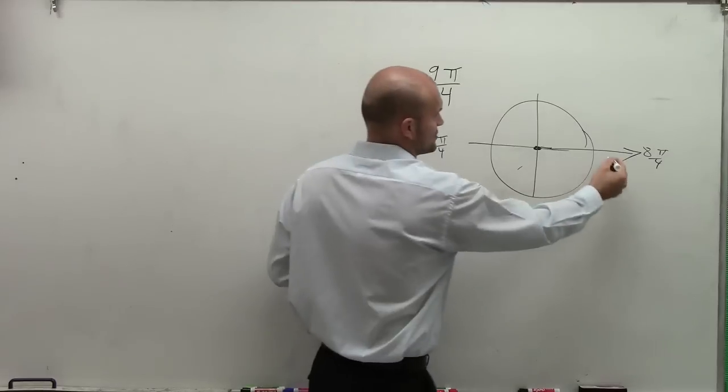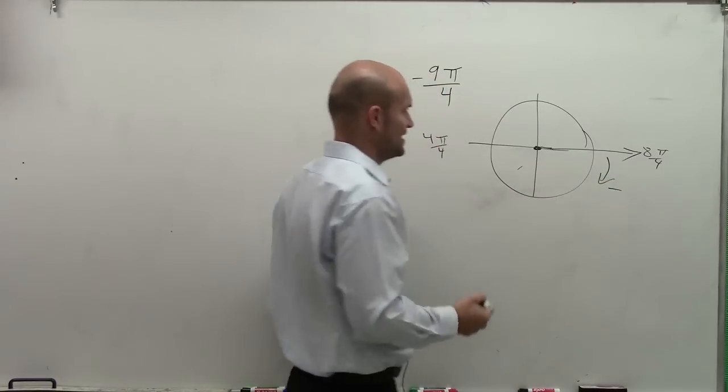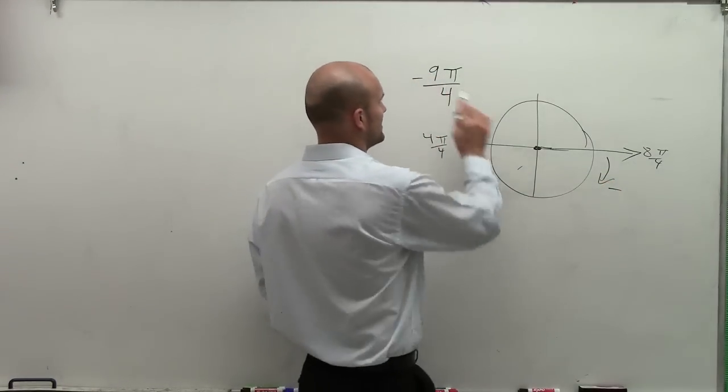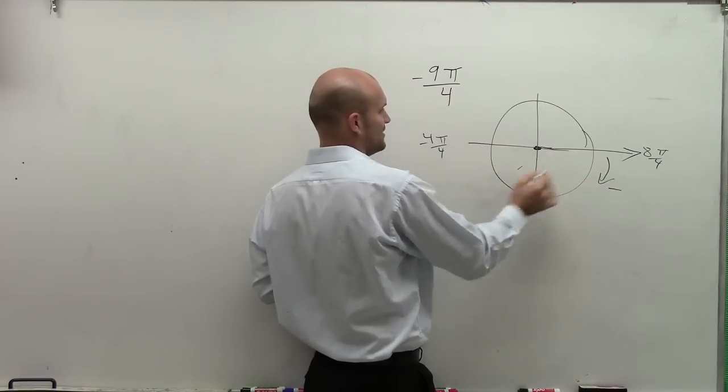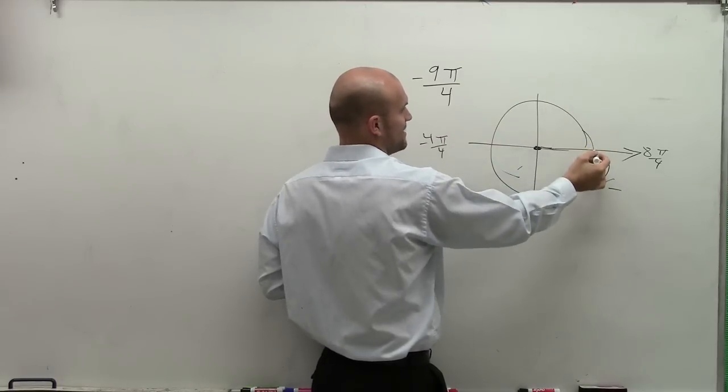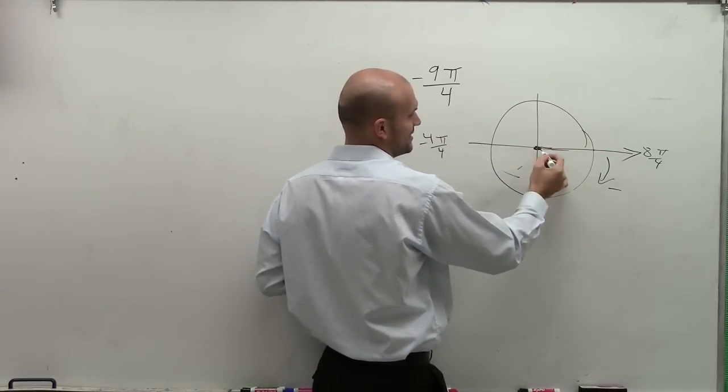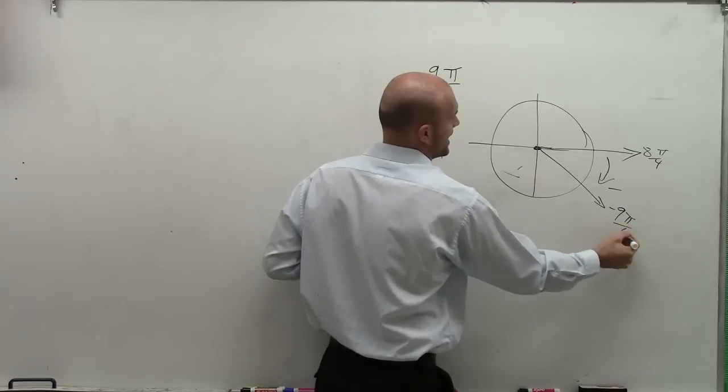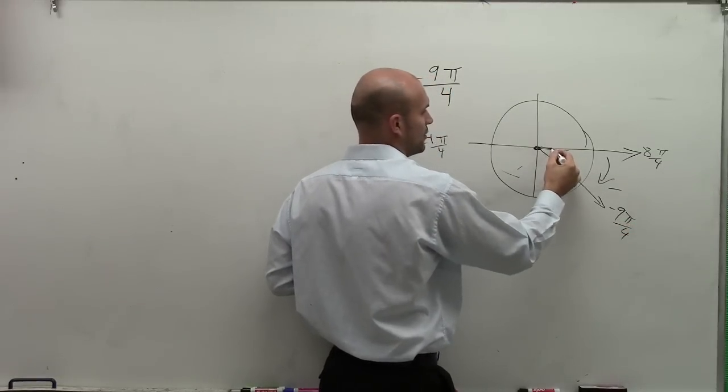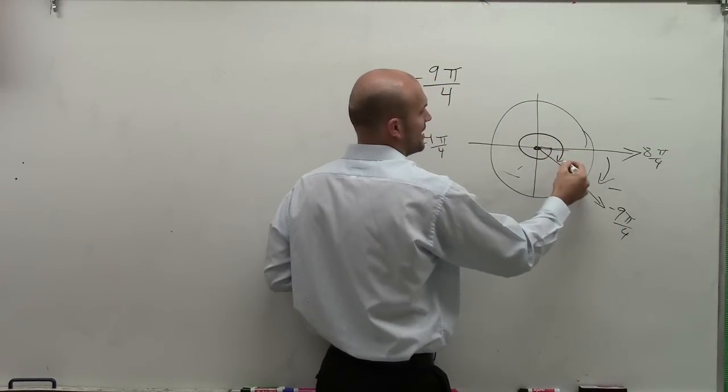Now remember, we're going in the negative direction. So I'm going to go down this direction, which would be negative. So my angle, if it's negative 9 pi over 4, that means I'm going negative 4 pi over 4 to negative 8 pi over 4, then down to here, which is going to be my negative 9 pi over 4. So that means my angle has to go all the way around and then down again.